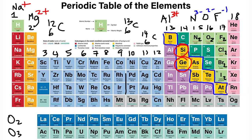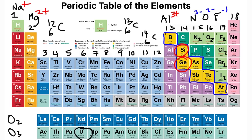Some elements are very rare and expensive — silver, gold, palladium, and platinum have very high prices. Uranium is radioactive and is used for nuclear fission in nuclear reactors.